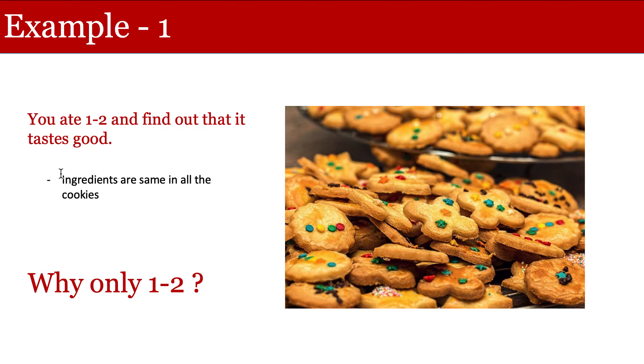Now this inference actually depends on an assumption. If the ingredients you use to bake that cookie, if those ingredients are mixed well and properly throughout all the cookies, then your inference is good. But just imagine what will happen if some of the ingredients are not mixed well and they ended up in only one or two cookies. And if a person is going to eat those cookies, he might find the taste not that good. So this is the first example.